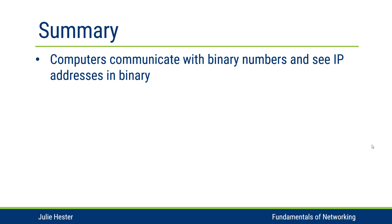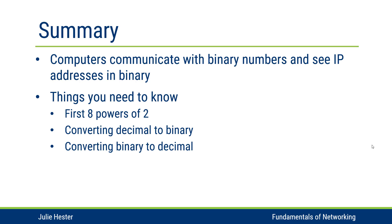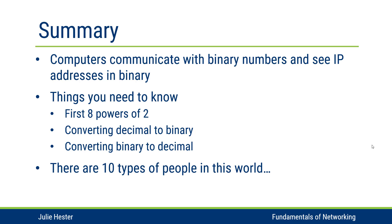In summary, we saw how computers communicate with binary numbers and see IP addresses in binary. Things you need to know are the first eight powers of two, how to convert decimal numbers to binary, and how to convert binary numbers to decimal. To conclude with a little joke: there are one zero types of people in the world. It looks like decimal ten, but it's really meant to be a binary number — binary one zero is equivalent to decimal two. So what we're really saying is there are two types of people in this world: those who understand binary, and those who do not.